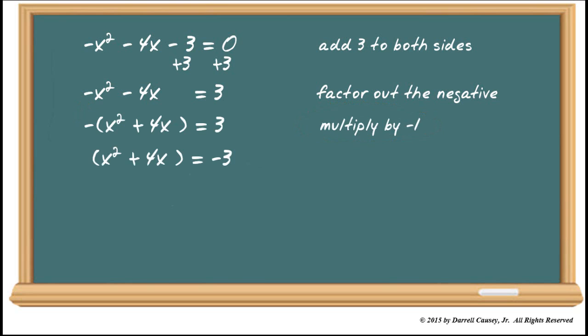So now we'll add 3 to both sides and then factor out a negative as well. So therefore, we have X squared plus 4X equals negative 3. Now, take the middle term, the 4X, take half of that, and you'll get 2. Square that, and you're, of course, going to get 4.